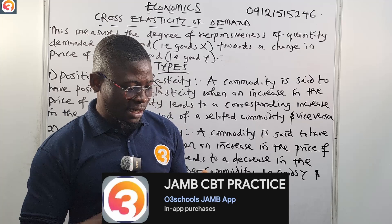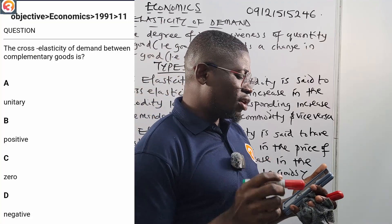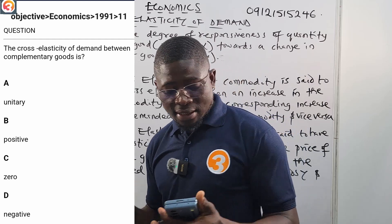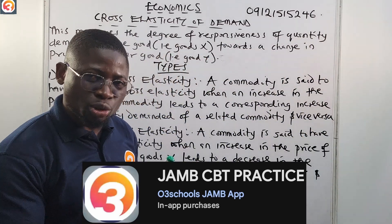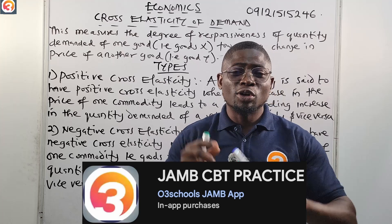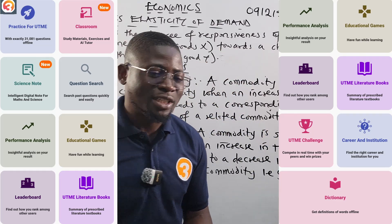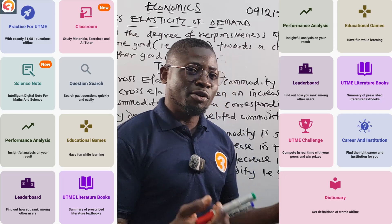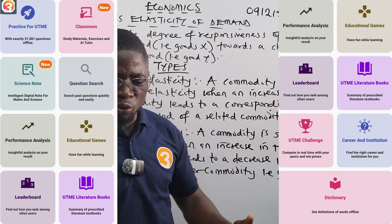Now let us look at a JAMB past question from the app. In 1991, question number 11, it says: the cross elasticity of demand between complementary goods is — A: unit, B: positive, C: zero, D: negative. We'll come back to answer this at the end of class. At All3Schools we believe in giving you value first. The app has all past questions for your exam for all subjects, with lecture notes structured according to the JAMB syllabus and a question search feature. I searched for cross elasticity and the questions came right out.